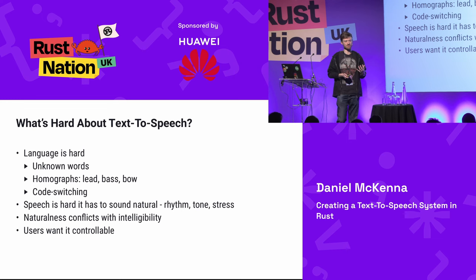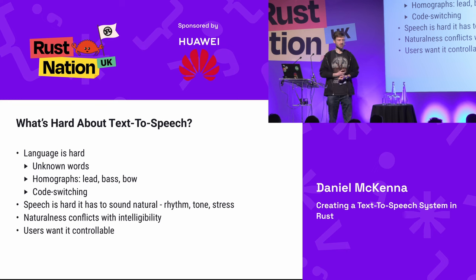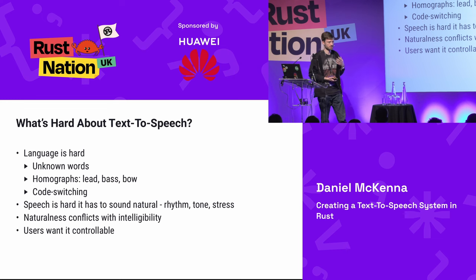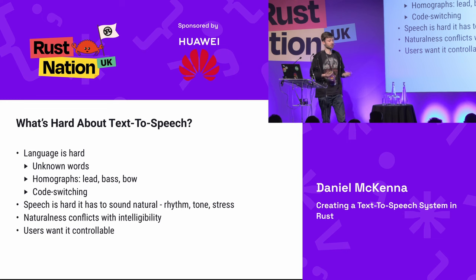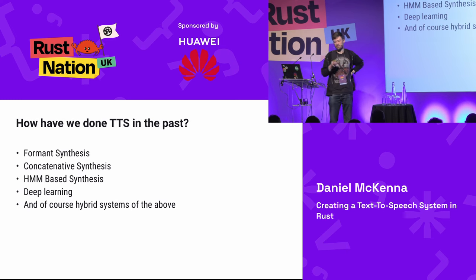You also have to think about how the speech sounds. In text-to-speech we're constantly balancing between naturalness — how much it sounds like a real person — and intelligibility. TTS is used for accessibility systems like screen readers, where people need to understand the speech clearly. So you have to think about what your system is targeting: accessibility needs, or sounding like a human being. People also want to control volume, speed, pauses, and all manner of things. That's what makes text-to-speech challenging.